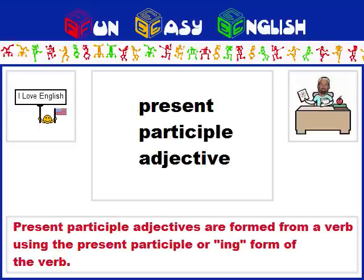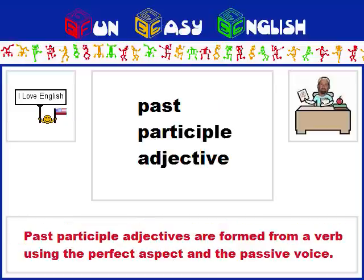Present participle adjectives are formed from a verb using the present participle or -ing form of the verb. Past participle adjectives are formed from a verb using the perfect aspect and the passive voice.